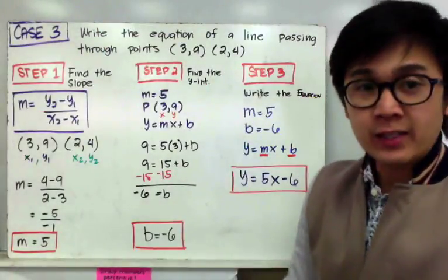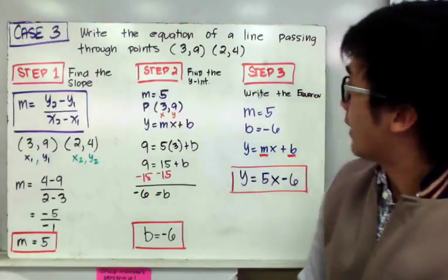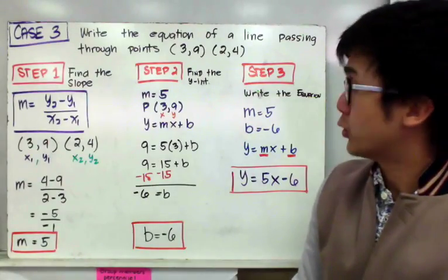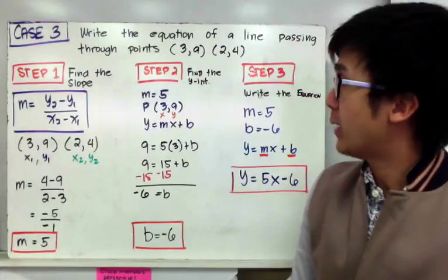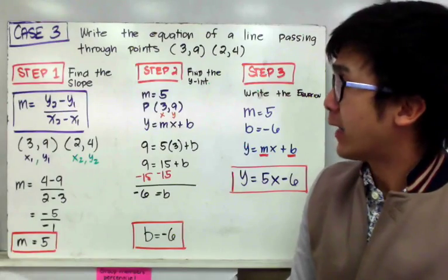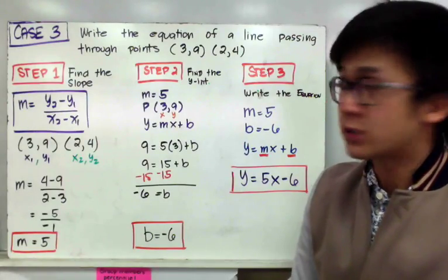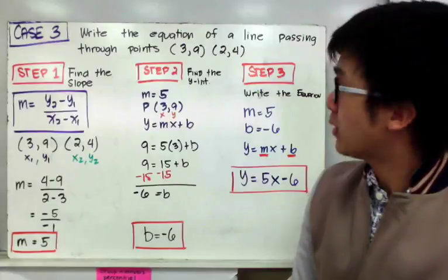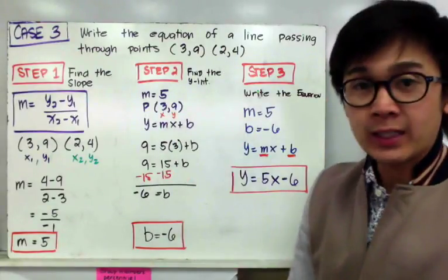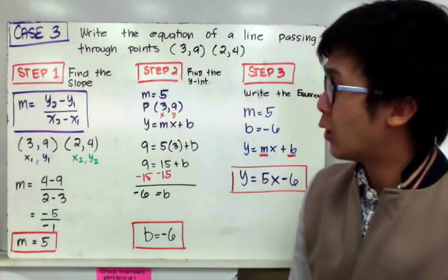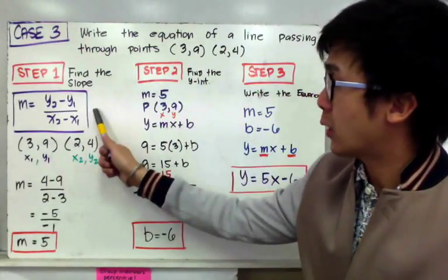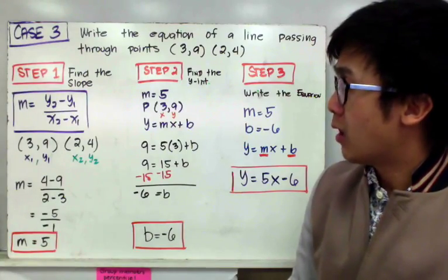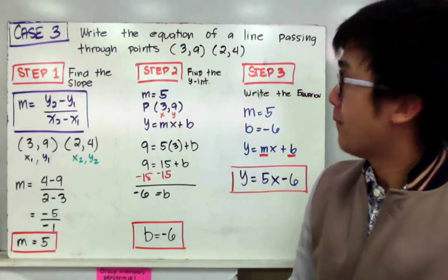For this case, we have to write the equation of a line that's passing through points (3, 9) and (2, 4). The first step in case number 3 is to find the slope of the given line. Now that we have the two points, we can easily find the slope by using the slope formula: y₂ minus y₁ all over x₂ minus x₁.